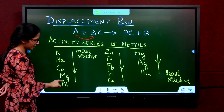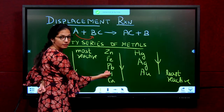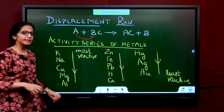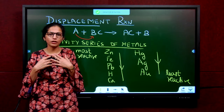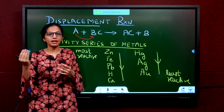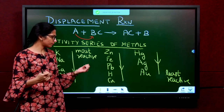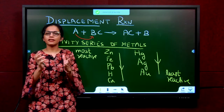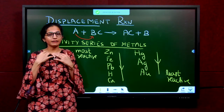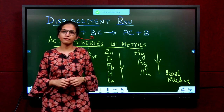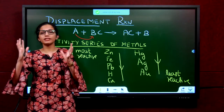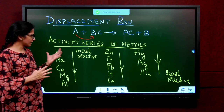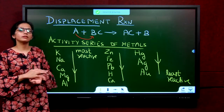Potassium is the most reactive. Then you have Na, Ca, Magnesium, Aluminium, Zinc, Iron, Lead, Hydrogen, Copper, Mercury, Silver, Gold. Silver and Gold are least reactive, which is why we wear ornaments of silver and gold. People who wear artificial ornaments — aluminium, copper, or others — get rashes, because they react with oxygen and other components in the air. Gold and silver are least reactive; they don't react easily and give you any kind of infection or allergy.